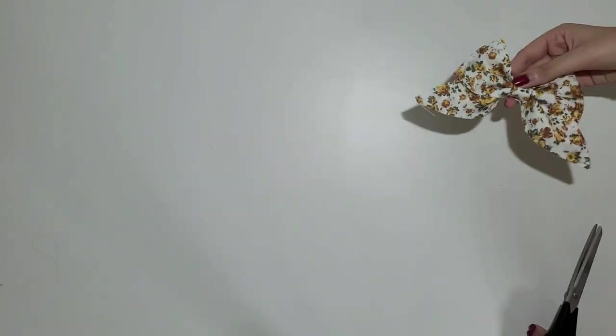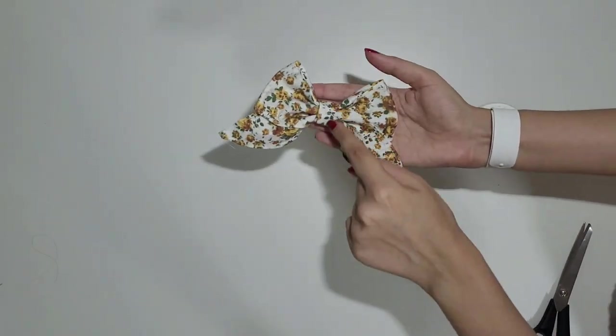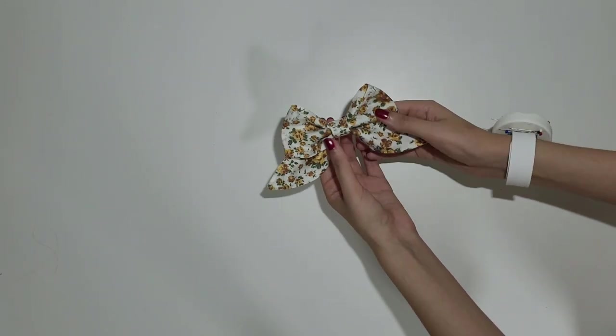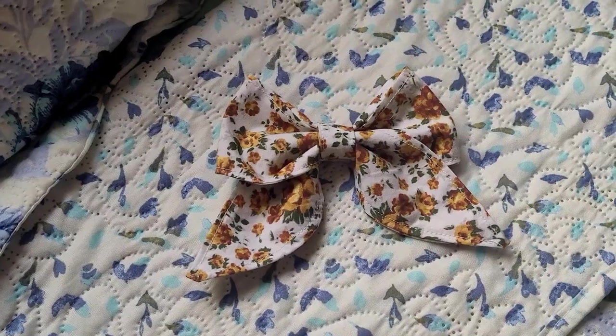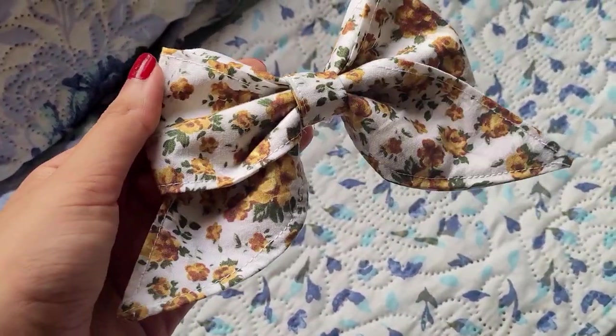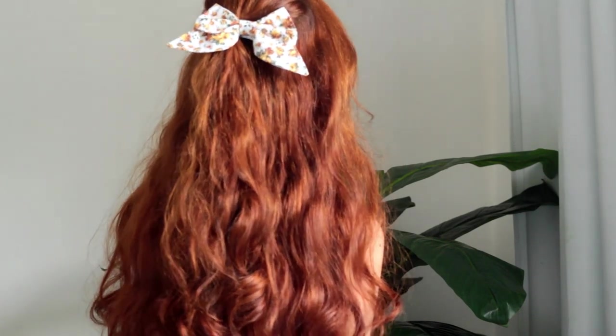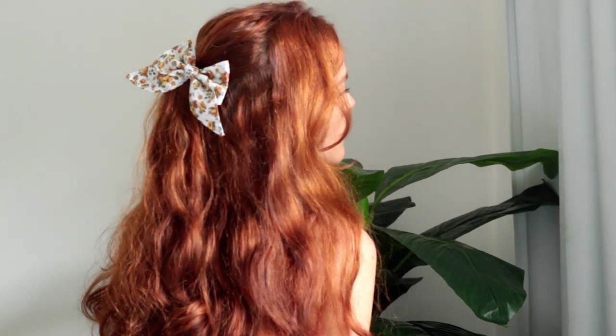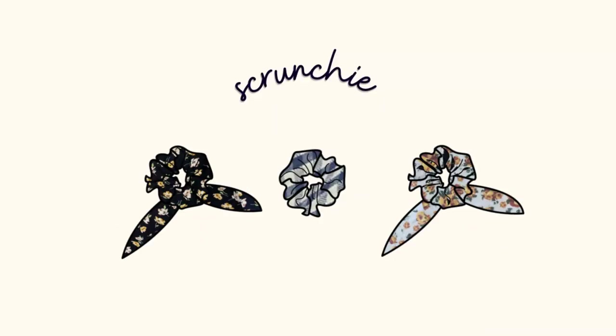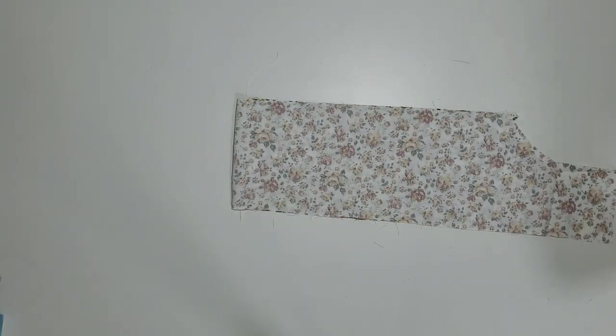Now you can do whatever you want with your bow. I decided to add a hair pin to use it as a hair accessory. Now for the scrunchie. Fold your fabric in half and cut the pattern piece.